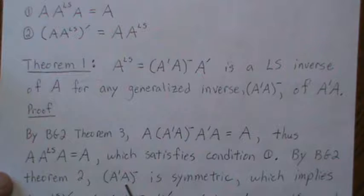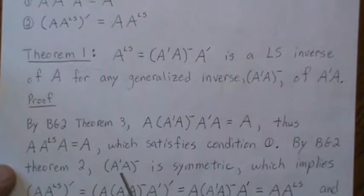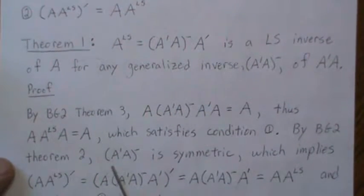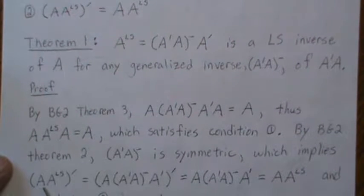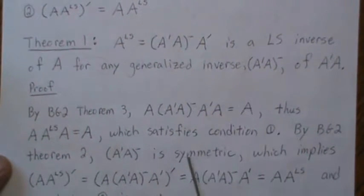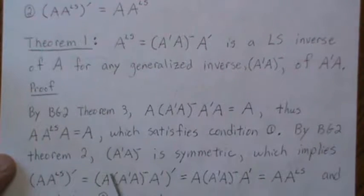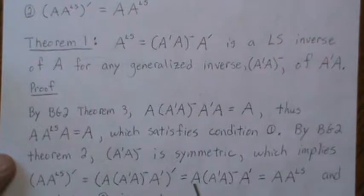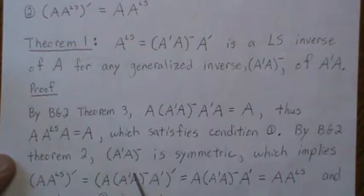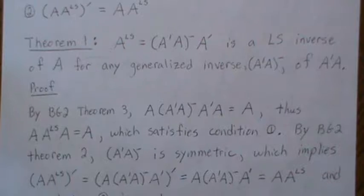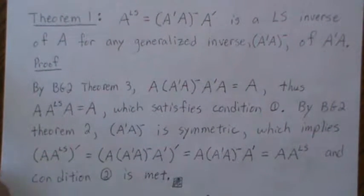By background video two, theorem two, we know that the generalized inverse for A-prime·A is symmetric, because A-prime·A is symmetric. Now if we look at this quantity and plug in what our least squares estimate is, then take the transpose — distributing into each term and reversing the order — A-prime·A is symmetric, so the result is symmetric. Therefore condition two is met, and this is a least squares inverse.